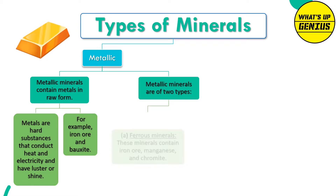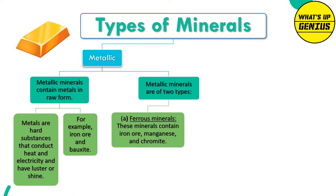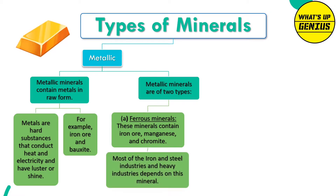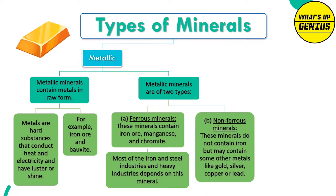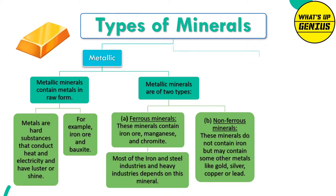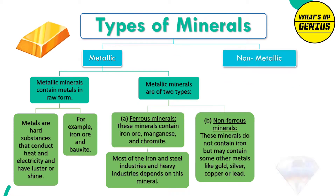Metallic minerals are of two types. A. Ferrous minerals — these minerals contain iron ore, manganese and chromite. Most of the iron, steel and heavy industries depend on these minerals. B. Non-ferrous minerals — these minerals do not contain iron but may contain other metals like gold, silver, copper or lead.